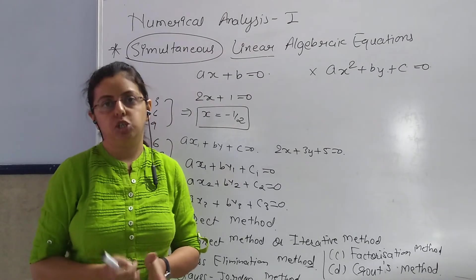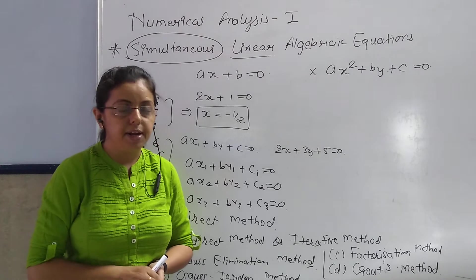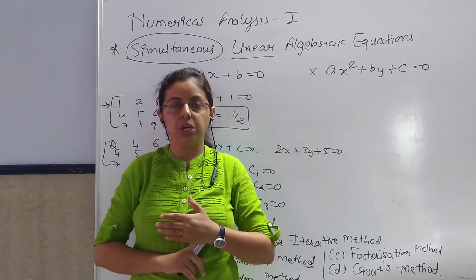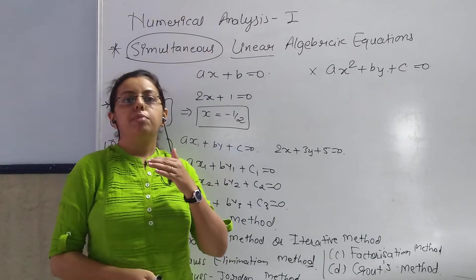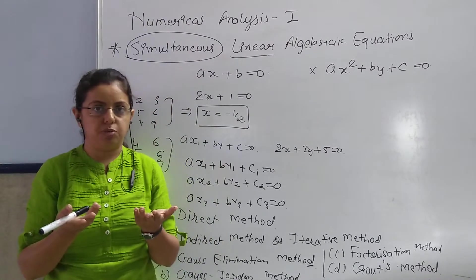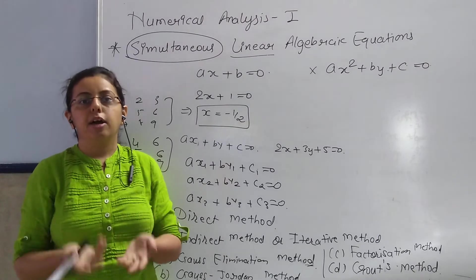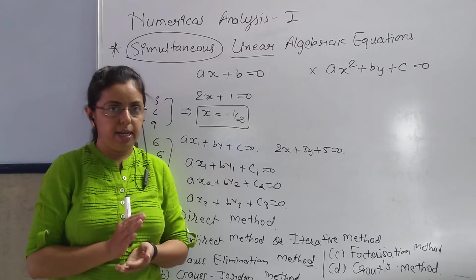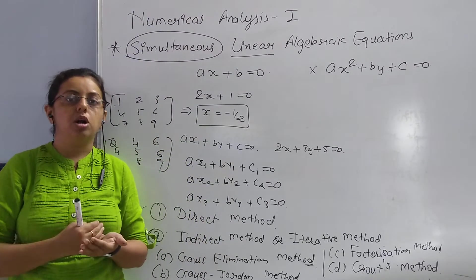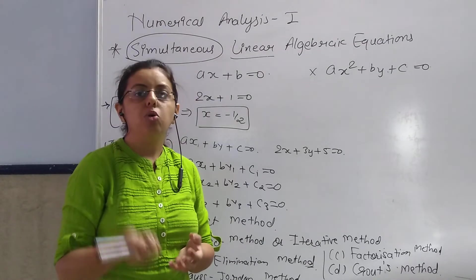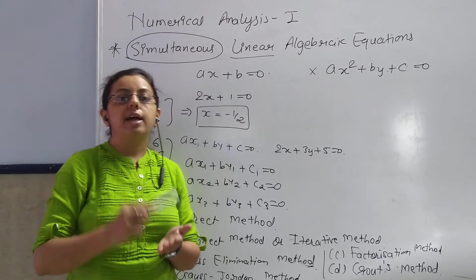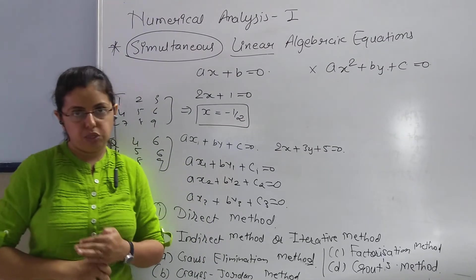Third point: take one row or one column, multiply it by a scalar, and add it to another row. That is also known as an elementary transformation. So there are mainly three points of elementary transformation: interchange two rows/columns; multiply a row/column by a scalar; multiply a row/column by a scalar and add to another row.